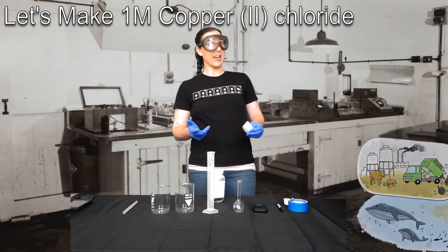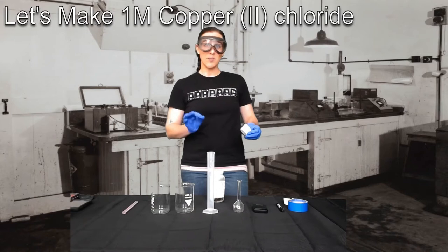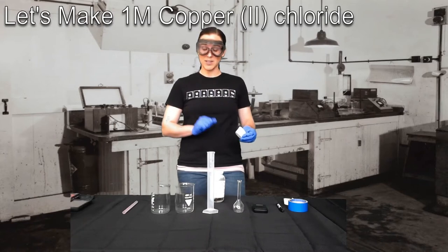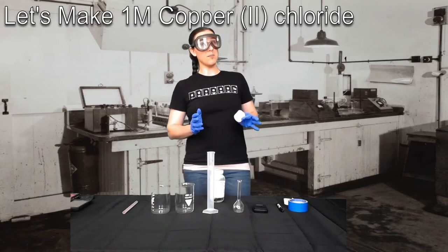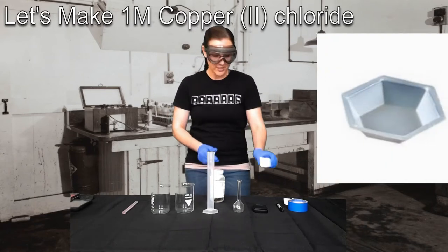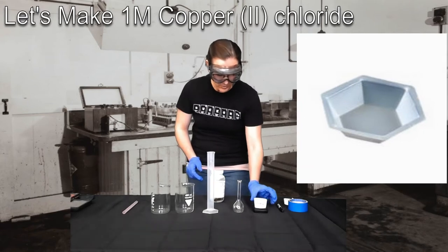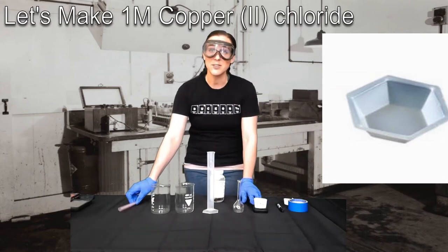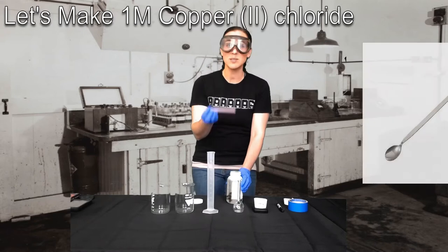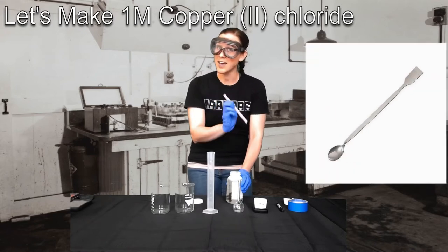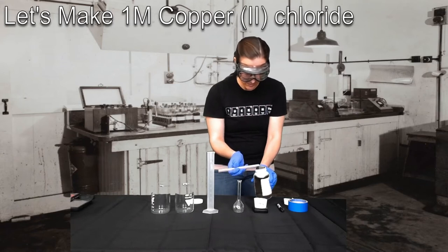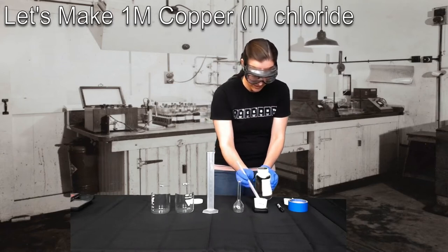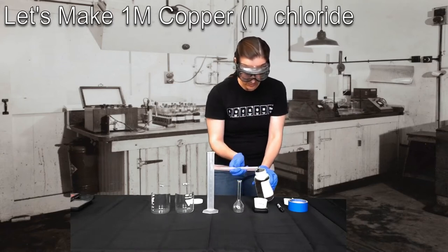As we found out in our calculations, we need to measure out 7.975 grams of CuCl2 in order to create 50 milliliters of a one molar solution. So this is my makeshift weighboat for measuring out the CuCl2. I'm just going to zero that on my scale here. And here is my makeshift scupula, a boba straw. And we're going to mass out 7.975 grams of CuCl2.